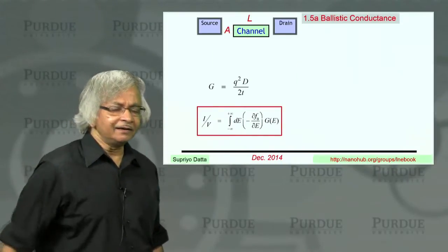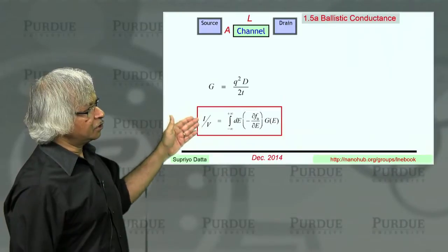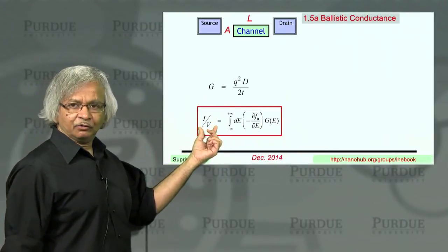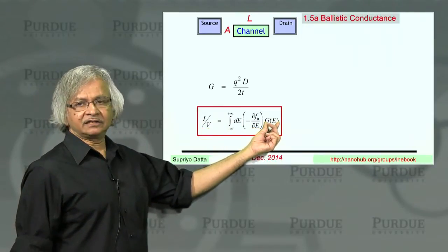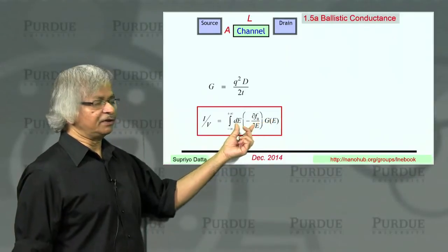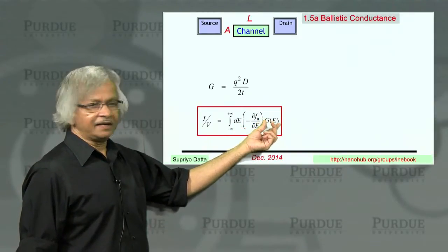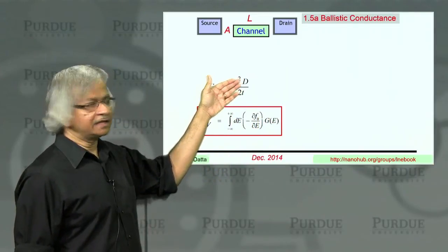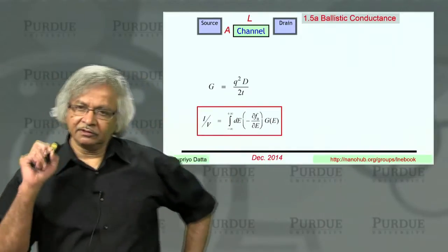What we did in the last lecture is we showed that the current divided by voltage is given by this average of a conductance function, this average over energy. And the conductance function itself at any given energy depends on the density of states at that energy and the time it takes for an electron to get from left to right.